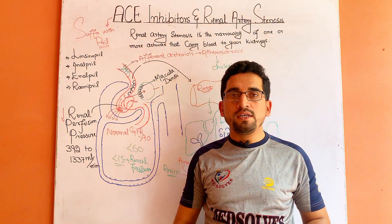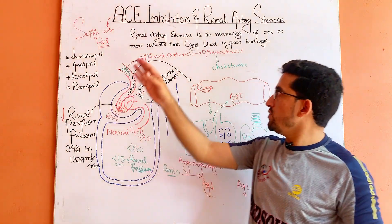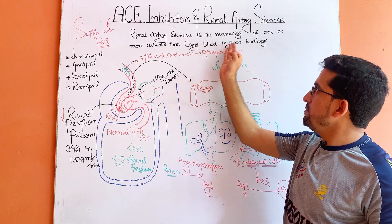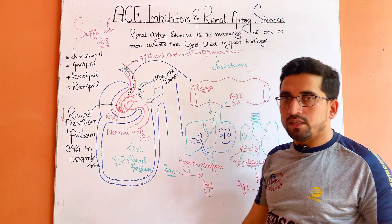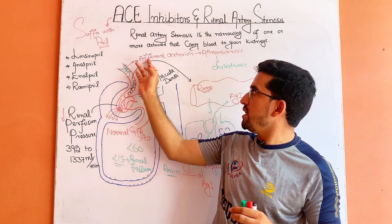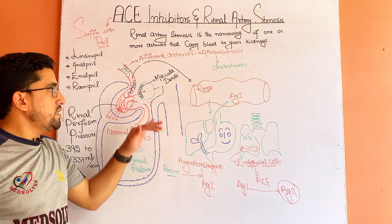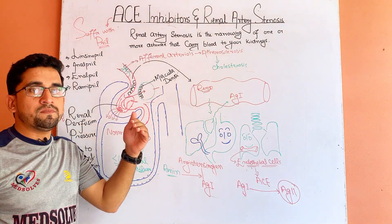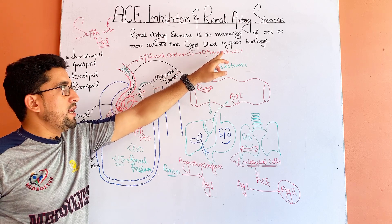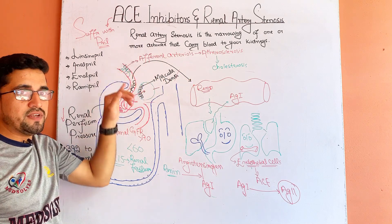First of all, what is renal artery stenosis? Renal artery stenosis is the narrowing of one or more arteries that carry blood to the kidney. The afferent arterioles that carry blood towards the kidney become narrowed due to different conditions such as atherosclerosis, in which there is a buildup of cholesterol in the blood vessel.